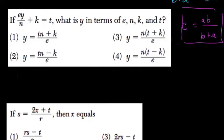If EY over N plus K equals T, what is Y in terms of E, N, K, and T? So they want us to isolate Y over here.